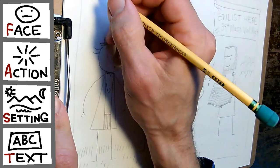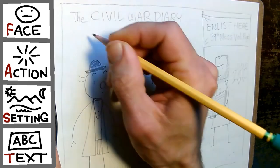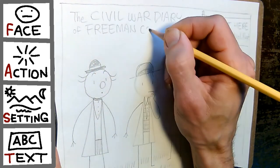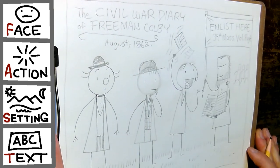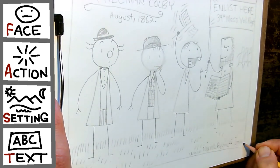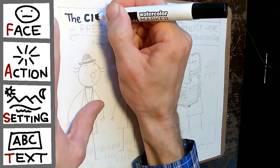And then we'll add a title, The Civil War Diary of Freeman Colby, August 1862. So that's adding text and setting details, because the setting is place and time. And I like to add my website.